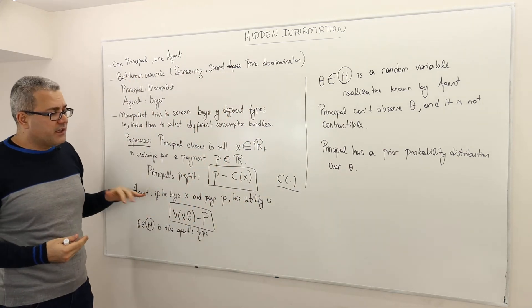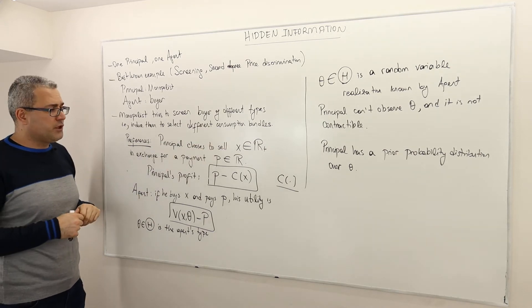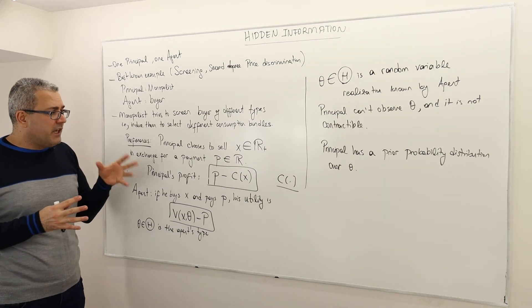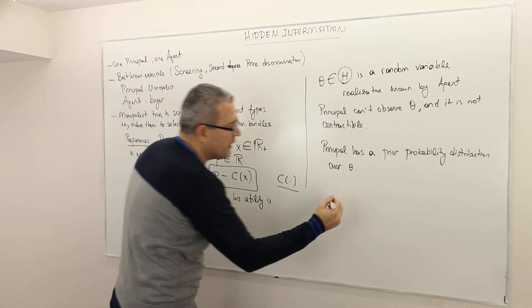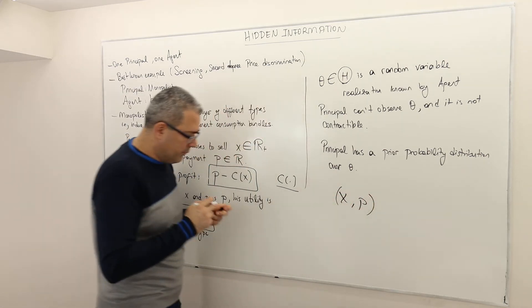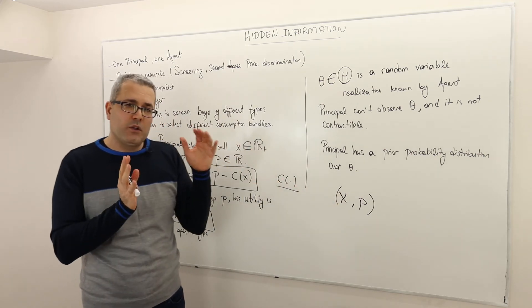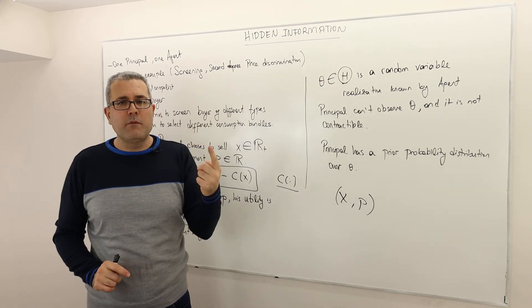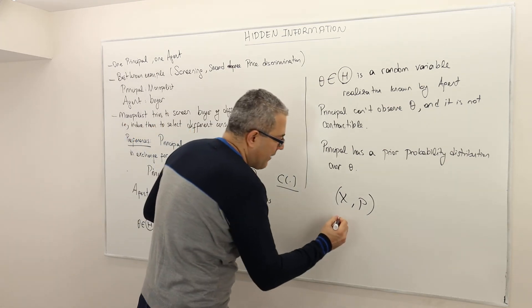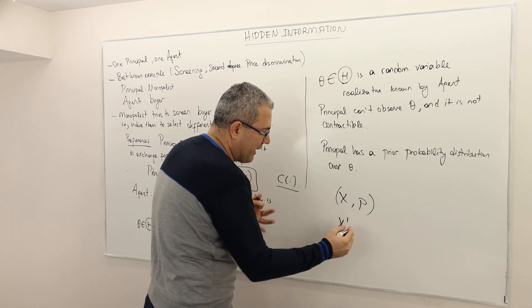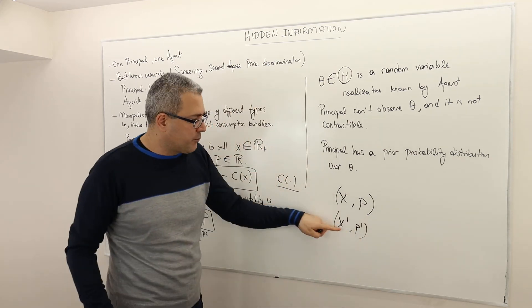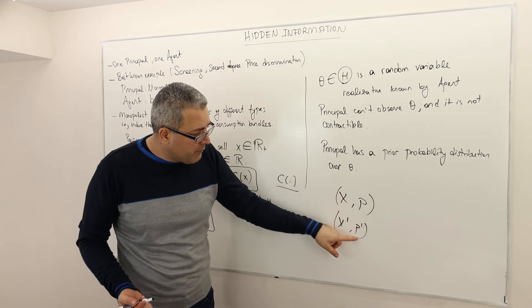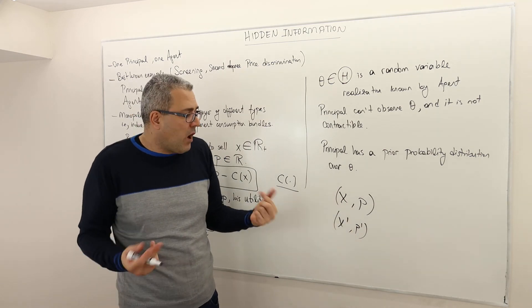The question is, under this scenario, what X should the monopolist choose and what P should the monopolist choose? Obviously here, the packages, so the bundle is actually X comma P. The monopolist is going to choose, I am going to sell X units of my product at a price P. But it doesn't have to be just one bundle. It can actually sell two bundles, X prime, P prime. Clearly X prime should be different than X. And obviously, if X prime is different than X, P prime should also be different than P.